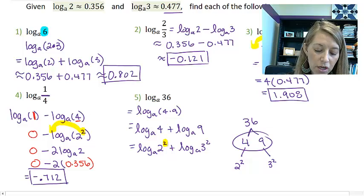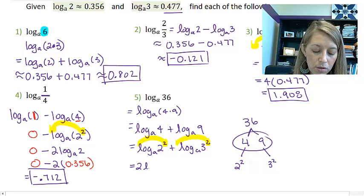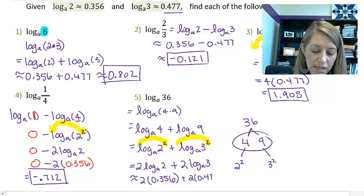And then I can change my power rule by bringing my power down in front. And so this gives me 2 times log base A of 2 plus 2 times log base A of 3. So now I can put in my approximations, 2 times 0.356 plus 2 times 0.477.